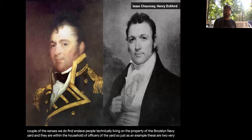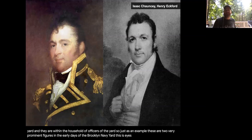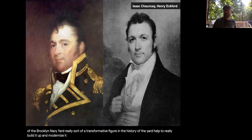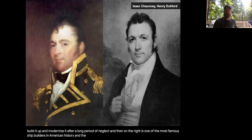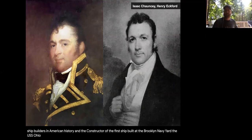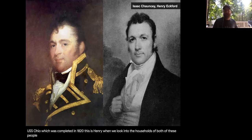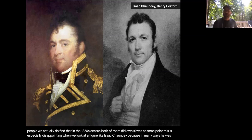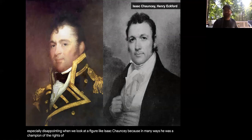Two very prominent figures in the early days of the Brooklyn Navy Yard: Isaac Chauncey on the left — the longest-serving commandant, a transformative figure who helped build and modernize the yard after a long period of neglect — and Henry Eckford on the right, one of the most famous shipbuilders in American history and constructor of the first ship built at the Brooklyn Navy Yard, the USS Ohio, completed in 1820. When we look into the households of both in the 1820 census, we actually find that both did own slaves at some point. This is especially disappointing with Isaac Chauncey, because in many ways he was a champion of the rights of African Americans. Both men made their names on the Great Lakes during the War of 1812.